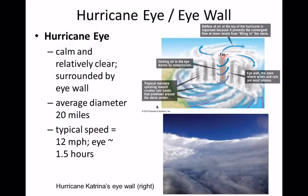Depending on how fast the hurricane is moving, it could take up to an hour and a half for the eye to pass your location, depending on how large the eye is. It's a little like the movie 'The Day After Tomorrow,' where characters knew they had a short window of calm while the eye passed before the rest of the storm resumed.